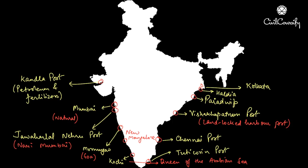The Haldia port is on the Hooghly River downstream and was built to reduce the congestion at the Kolkata port. It handles bulk cargo like iron ore, coal, petroleum, petroleum products and fertilisers. West Bengal is popular for jute products, so jute is also one of the export products for Haldia port.